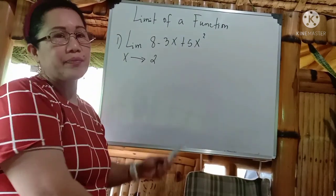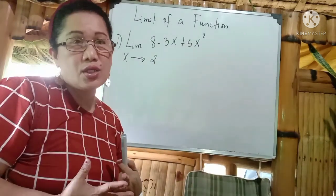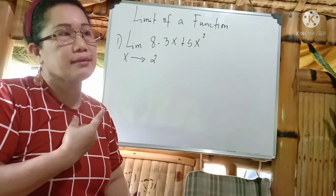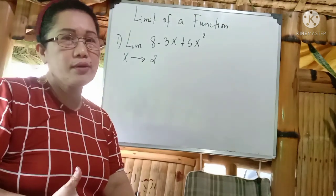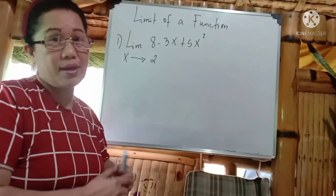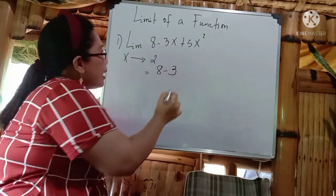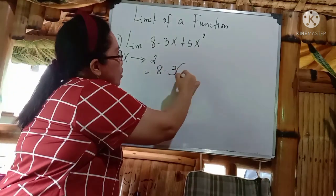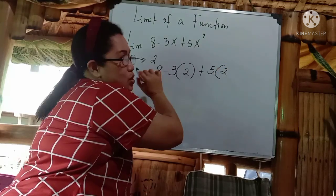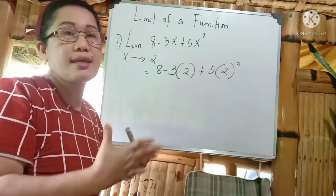So I have here Example 1: the limit of 8 minus 3x plus 5x squared when x approaches 2. First, we are going to check this trinomial if it is factorable. We know that this equation is not factorable, so what we're going to do is substitute the value of x. So we substitute: 8 minus 3 times 2, plus 5 times 2 squared.